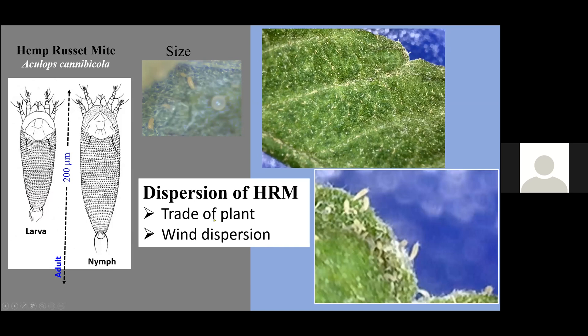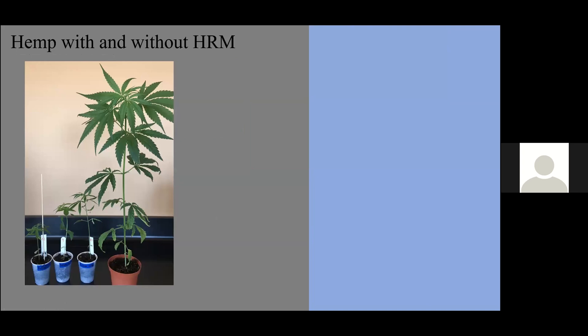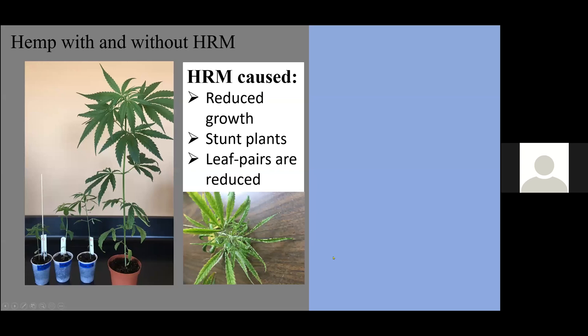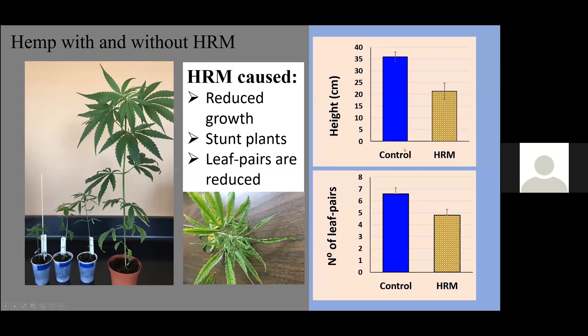There are many things that we are learning. One of the issues is how to study these insects to conduct research. We did some infection of plants. This is the control plant on the right versus the plants that were inoculated or infested with the hemp russet mites. These hemp russet mites reduce the growth of plants. You can see here the height, how the control plants are almost twice as large as the plants that have the hemp russet mites. They also reduce the number of leaf pairs. Each of these nodes has a leaf pair.